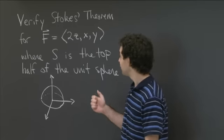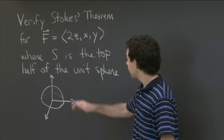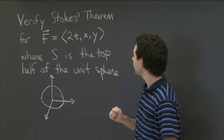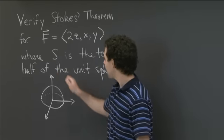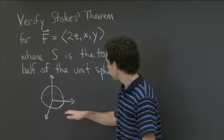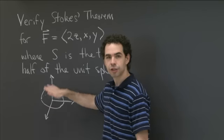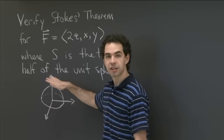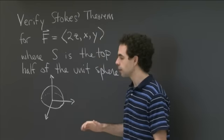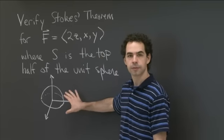What I'd like you to do is consider this field F, whose components are 2z, x, and y. And the surface S is the top half of the unit sphere — the sphere of radius 1 centered at the origin, but only the part where z is greater than or equal to 0. I'd like you to verify Stokes' theorem for this surface.